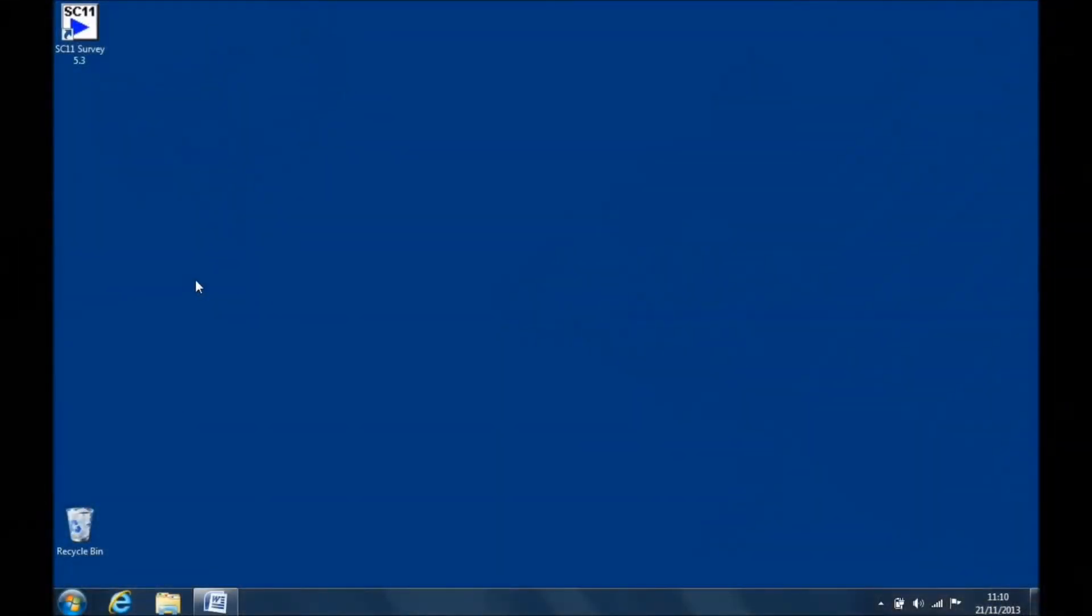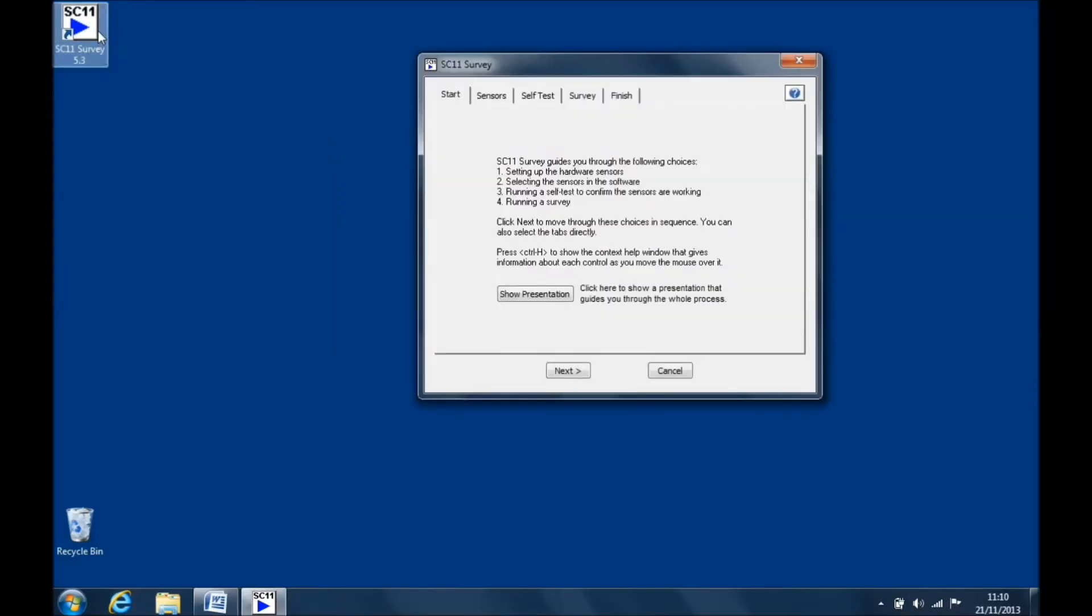Okay, so now it's time to perform the self-test. Find and open the survey program. This program enables you to make automated measurements of magnetic, acoustic and vibration signals. On the start tab, you will see a step-by-step guide to performing a survey.